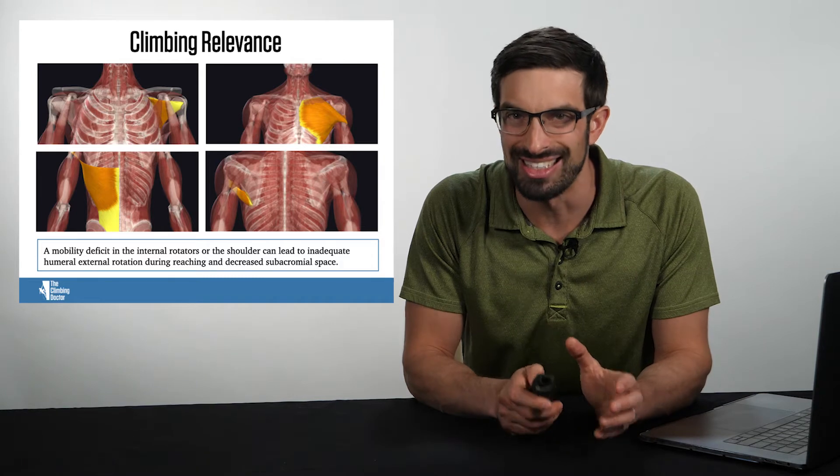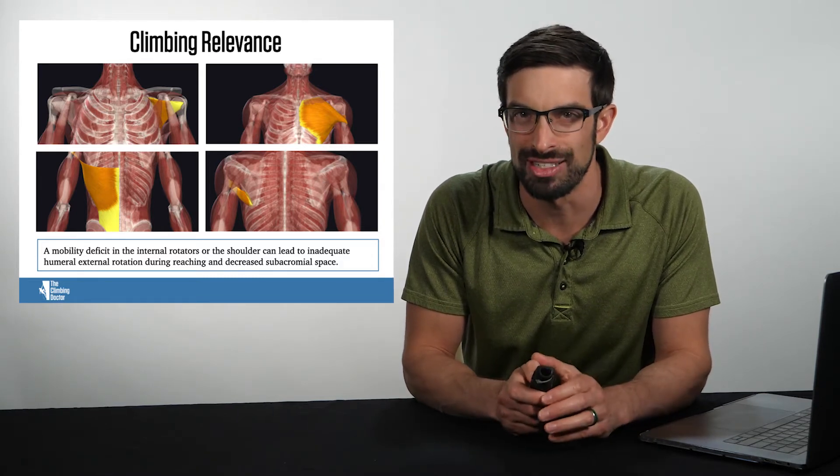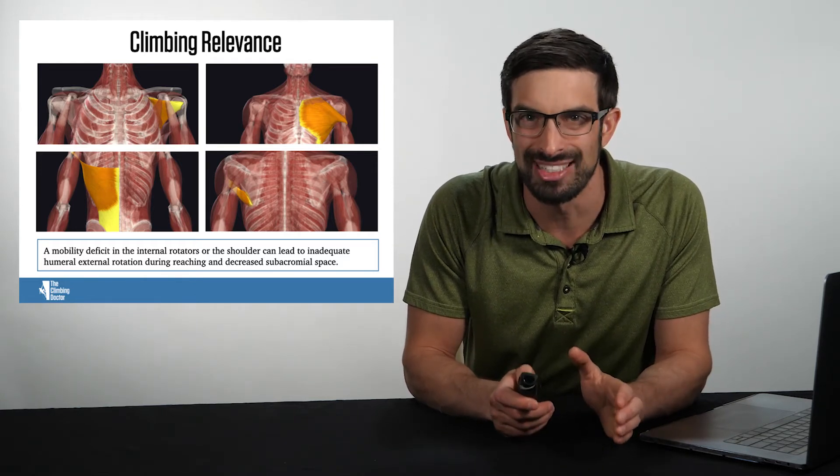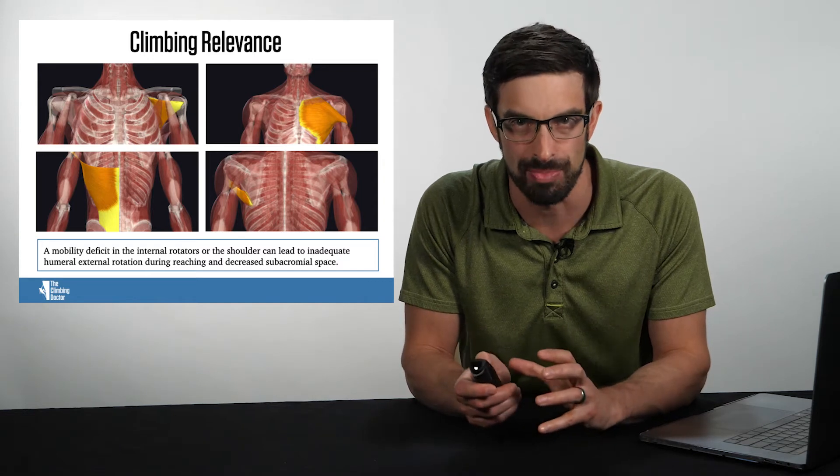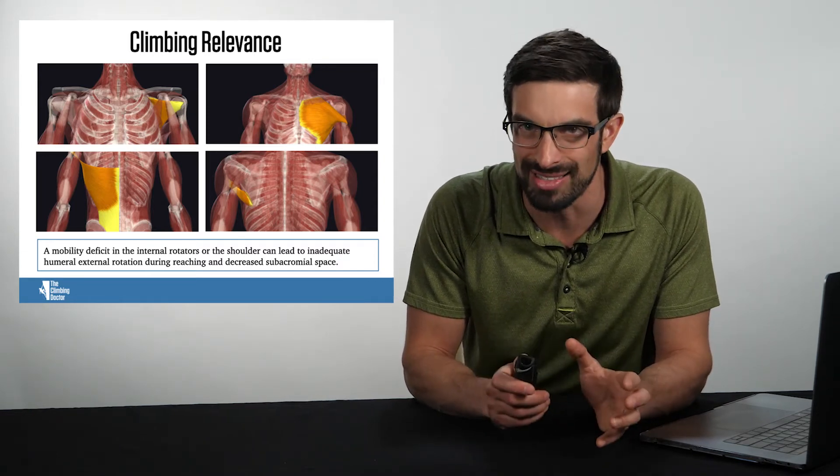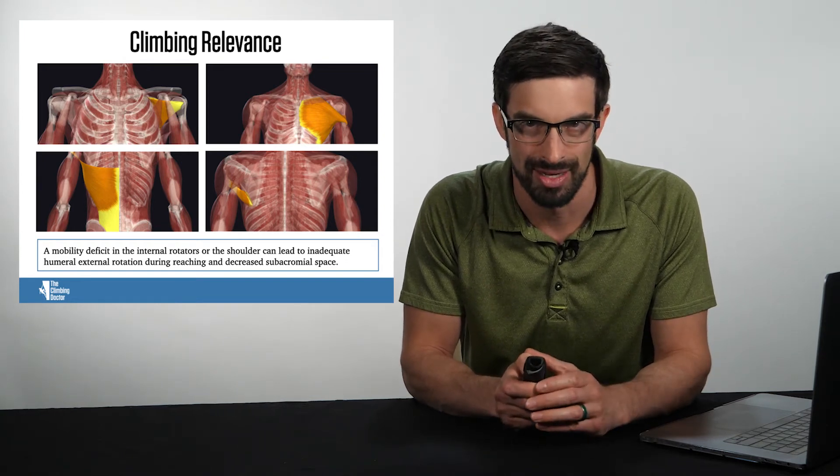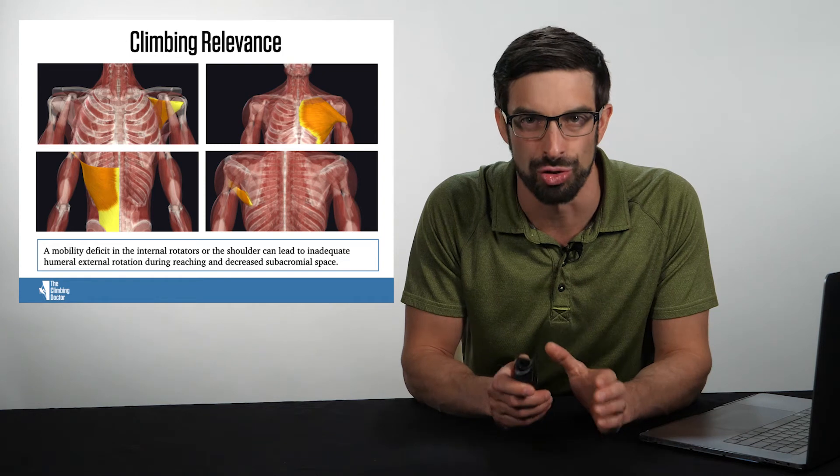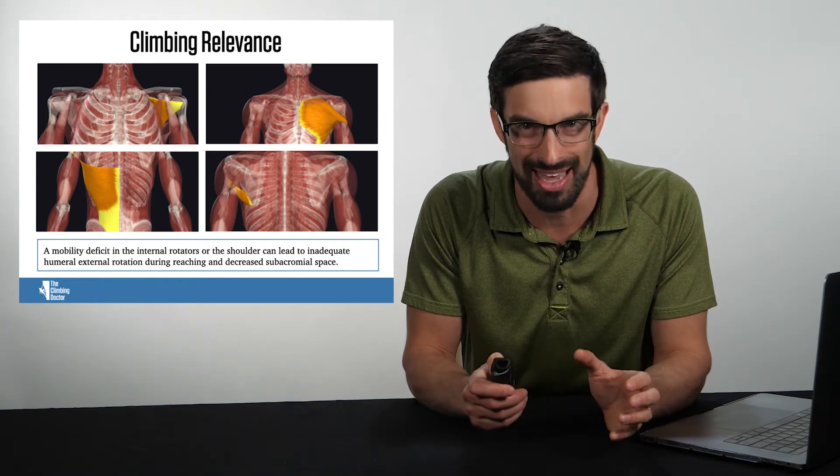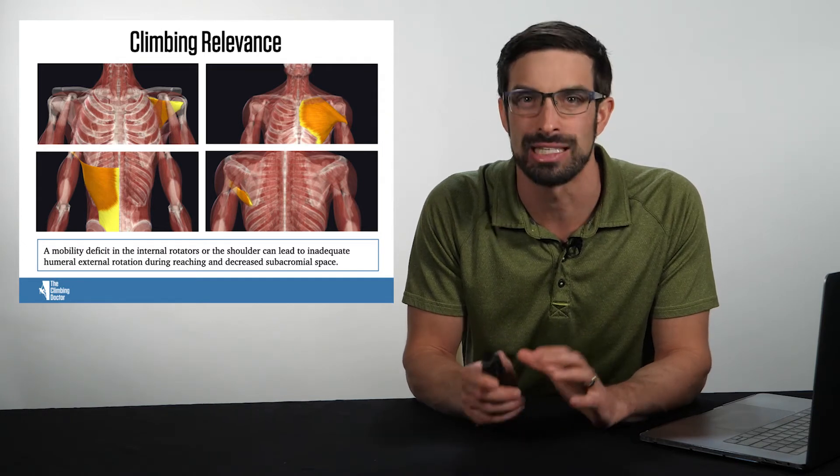To further differentiate latissimus dorsi and teres major, you can take the climber's humerus into greater degrees of shoulder flexion, up to 180 degrees. If you see the scapula slide away from the spine or thorax, then you can suspect that teres major is contributing to this mobility deficit. If you notice they arch their spine or flare their ribcage, you can determine that potentially latissimus dorsi is playing a role.